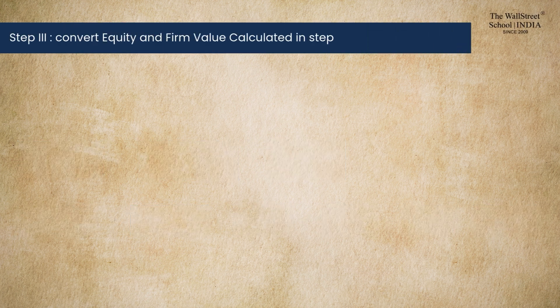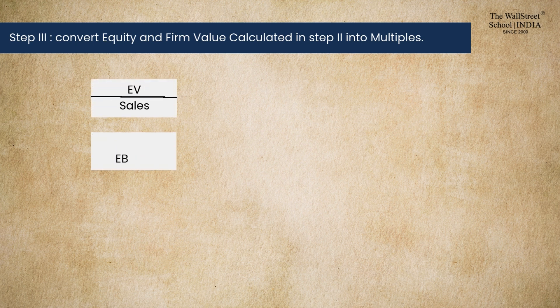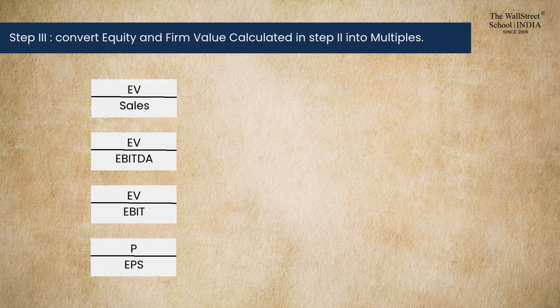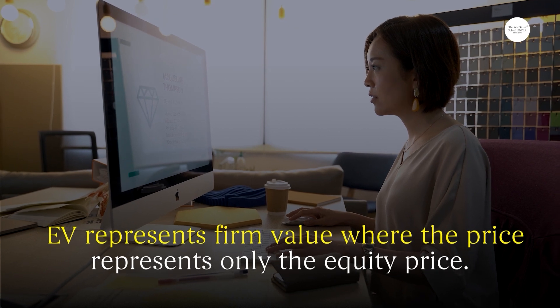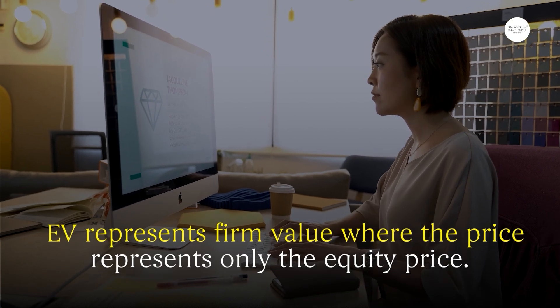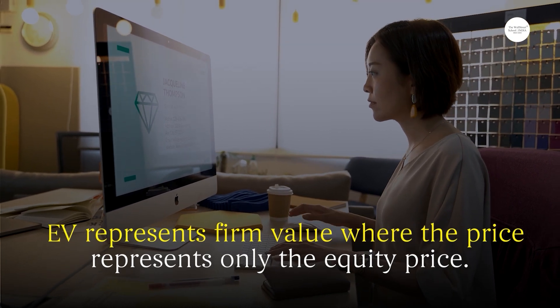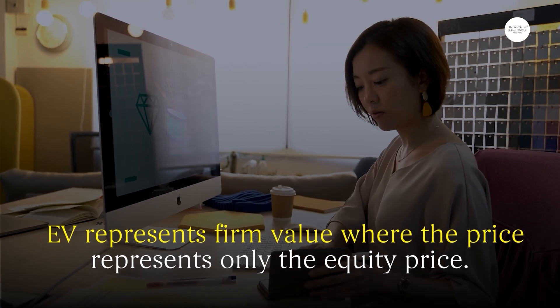Step three: convert equity value and firm value calculated in step two into multiples like EV/Sales, EV/EBITDA, EV/EBIT, or Price to Earnings. Here, EV represents firm value, while price represents only the equity price.